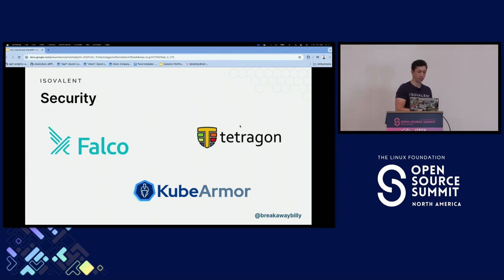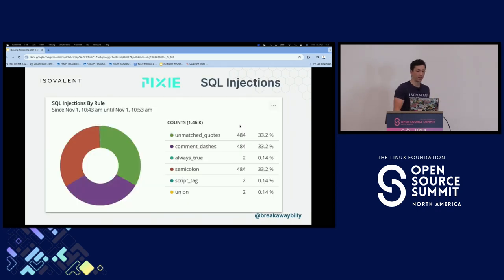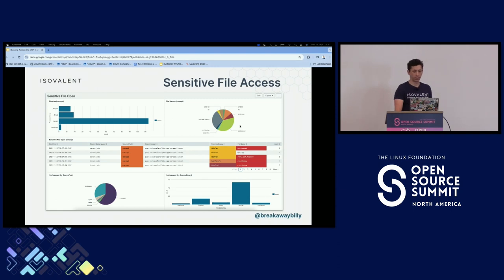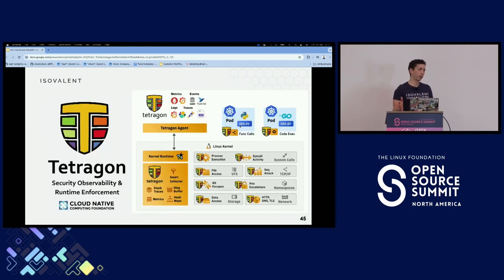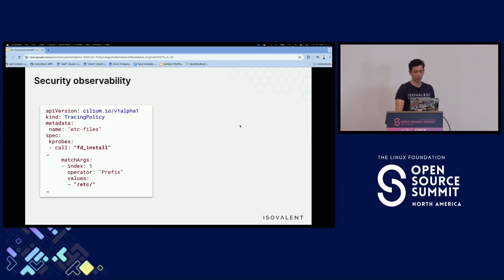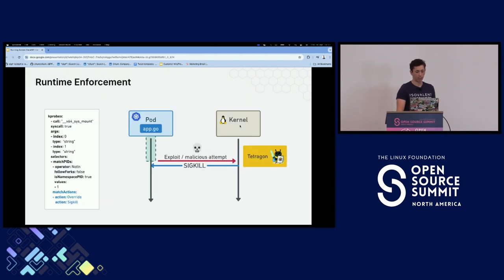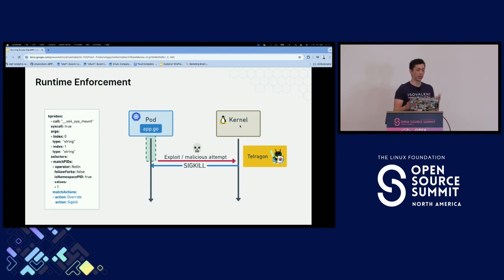Security is also a really hot topic. Since eBPF can see everything going on inside your kernel, it can surface any relevant security information. Projects like Pixie and Falco can detect things like sensitive file access. As a subproject of Cilium, there's also Tetragon, which provides security observability — allowing you to surface any information from the kernel and bring it into user space so you can take actions on it. Besides just having that information, it allows you to do runtime enforcement too. If there's a malicious process, you're able to kill it, and since all of this is happening in the kernel, it can all happen in real time.